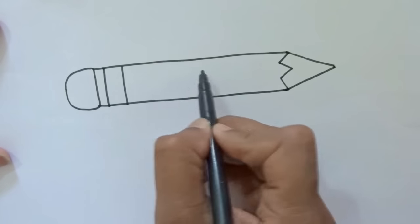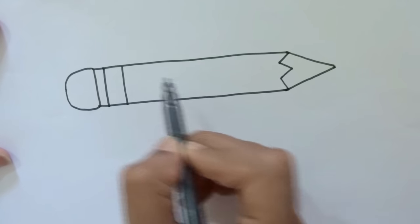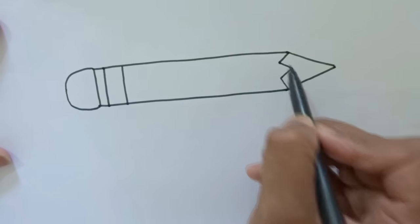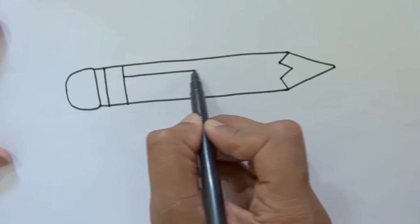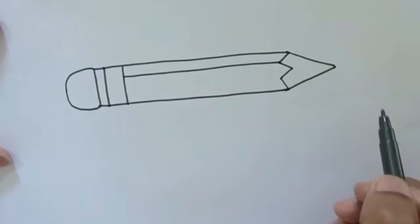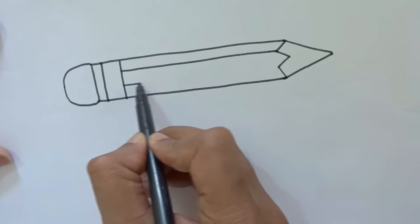Again we need to draw a horizontal line parallel to this and this. Actually two lines, touching this and this point. First one, then the second one.